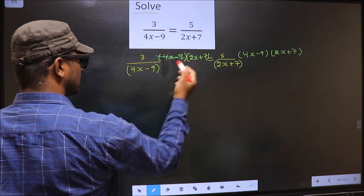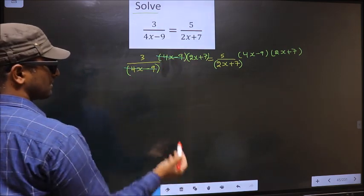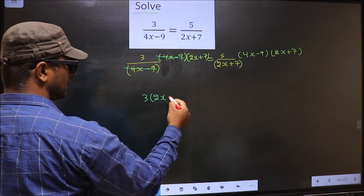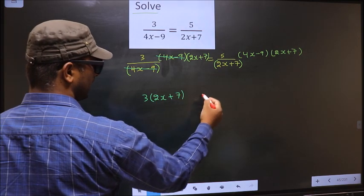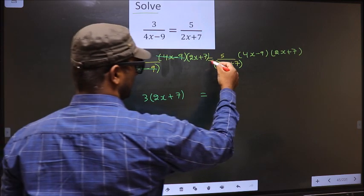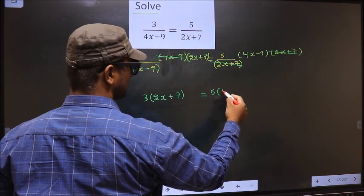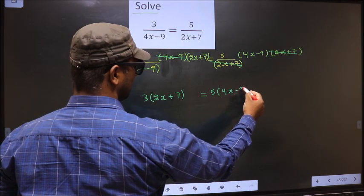Now 4x minus 9, 4x minus 9 cancel out, you are left with 3 times 2x plus 7 equal to... Here 2x plus 7, 2x plus 7 cancel out, you are left with 5 times 4x minus 9.